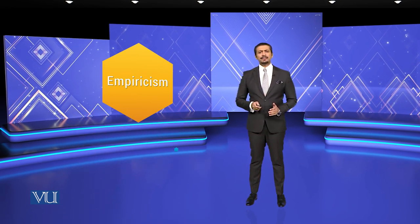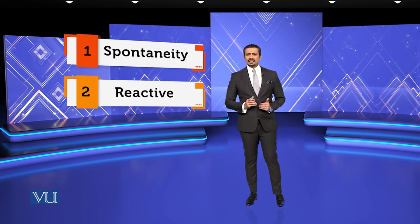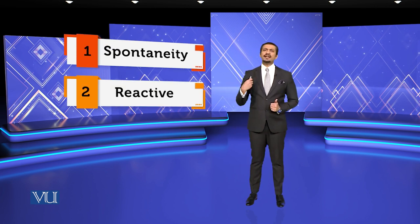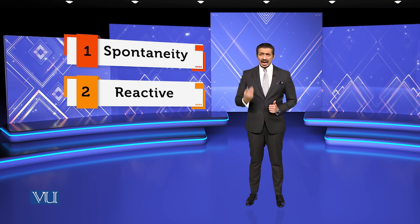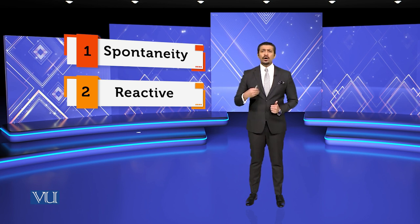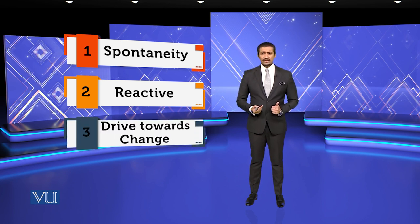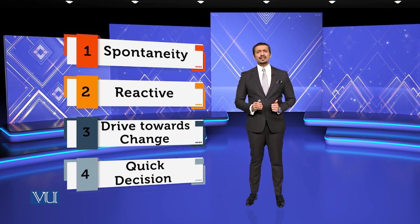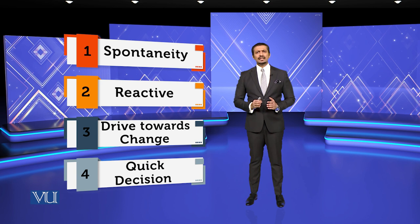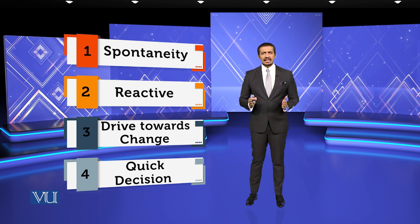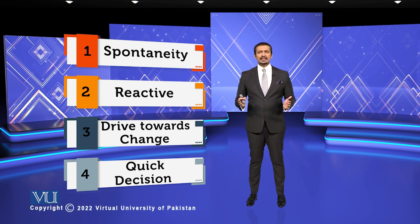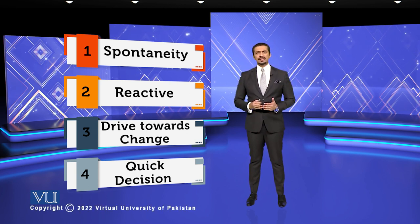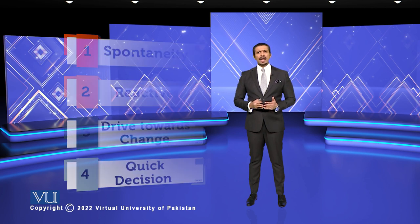अब हम यहाँ पर देख चुके हैं कि Kirznerian model जो है वो basically spontaneity की तरफ ले जाता है, reactive होता है, और change की तरफ describe करता है, और फौरी decision लेता है।